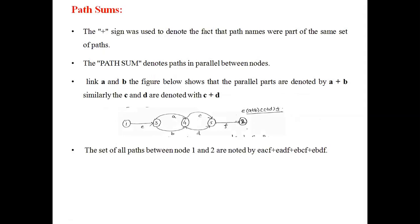Next, path sum. Path sum means we are performing a sum between parallel paths. The plus sign is used to denote the fact that path names are part of the same set of paths. The plus sign is not arithmetic addition — it explains that the paths are generated from the same flow graph. Path sum denotes paths in parallel between nodes.